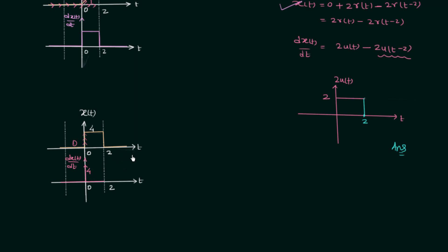From 2 to infinity, signal x = 0, a constant, so slope = 0. At t = 2 there is a falling edge, so the slope is again infinity but represented by an impulse with weight −4, since the signal is falling. So differentiating x(t) gives two impulses: one at t = 0 with weight 4 and one at t = 2 with weight −4. This is how you can quickly find the differentiation of a signal waveform using the graphical method.